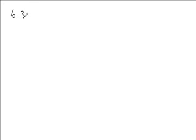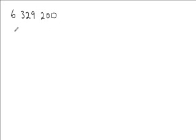First of all, we're going to look at how to express a large number in standard form. Firstly, we have the number 6,329,200. To write a number in standard form, we have a number between 1 and 10 times the power of 10.